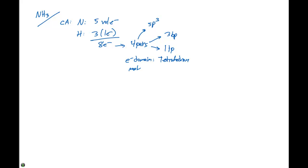Our molecular geometry is going to be dictated by that lone pair. When we place our electron domains around the central atom, we have nitrogen with four domains — three hydrogens and one lone pair of electrons. Remember from VSEPR theory that the repulsion is greater for a lone pair than for bonding pairs. So in CH4 we had a perfect tetrahedron with bond angles of 109.5°.